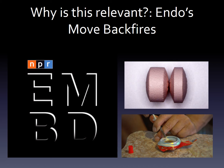As you heard, Endo's attempt to prevent abuse didn't really work. People can get around these abuse deterrents with really minimal effort. In fact, you can just Google it and you'll find plenty of videos showing you exactly how to quickly remove Opana's protective coating in a matter of minutes. Not only did Endo's move lead to an increase in illegal drug abuse, but it also had some really dangerous consequences for public health.